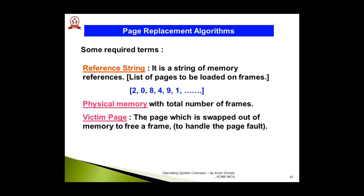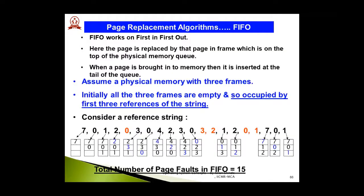To understand the various page replacement algorithms, there are certain key terms. The first is 'reference string' — the string of various memory references, i.e., the list of pages to be loaded. 'Physical memory' is the system memory with the available total number of frames. 'Victim page' is the page which is swapped out of memory to free a frame.